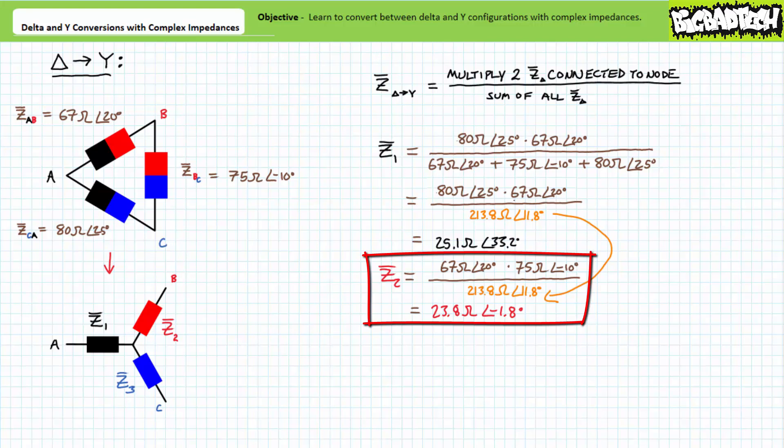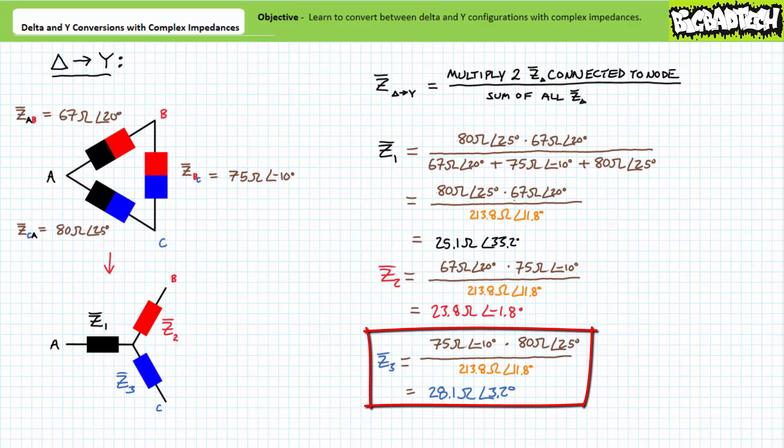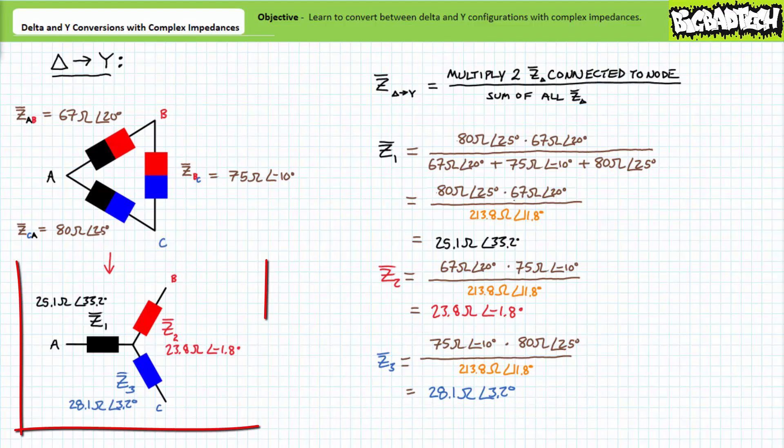To solve for Y impedance Z2, multiply the two delta impedance elements connected to node B, then divide by the previously calculated sum of all delta impedances. The formula suggests Z2 is 23.8 ohms at negative 1.8 degrees. Finally, to solve for Z3, multiply Z-B-C and Z-C-A, then divide by the sum of all delta impedances. The formula suggests Z3 is 28.1 ohms at 3.2 degrees directly connected to node C.